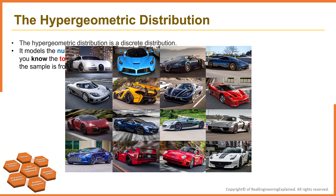The samples are without replacement, so every item in the sample is different. When an item is chosen from the population, it cannot be chosen again. When you test drive a car, you don't test drive the same car again. Therefore, an item's chance of being selected increases on each trial, assuming that it has not yet been selected.